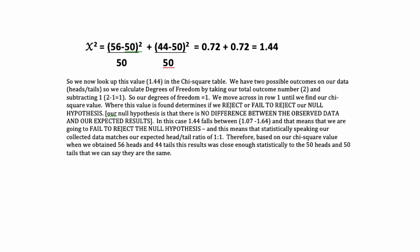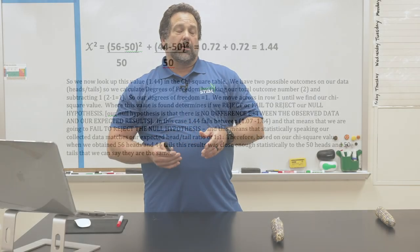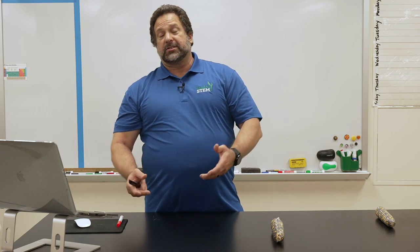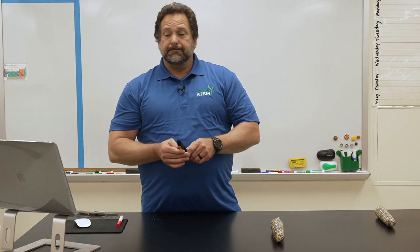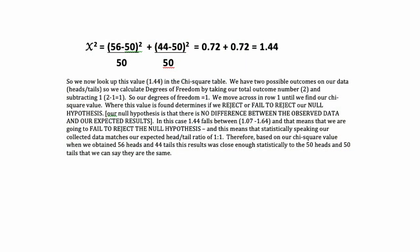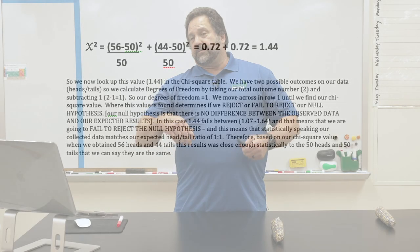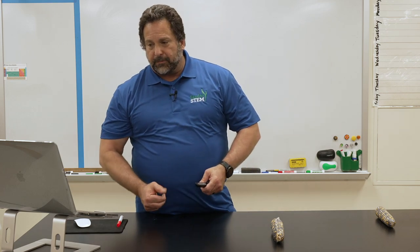That Chi-Square number is something we look up in a chart to determine whether it's accepted as showing no significant difference between our results and what's expected. The example on screen is flipping coins — you have a 50/50 chance of getting heads or tails. If you flip a coin a hundred times and got 56 heads and 44 tails, the expected result would be 50 and 50.